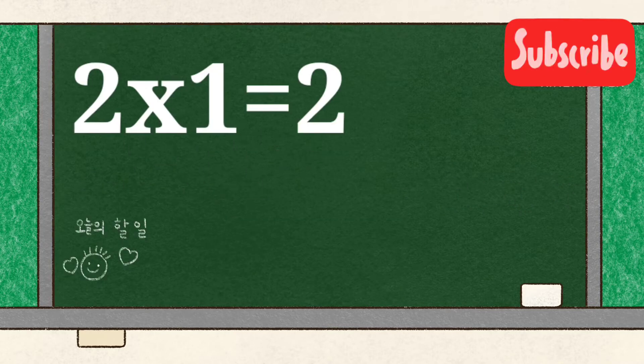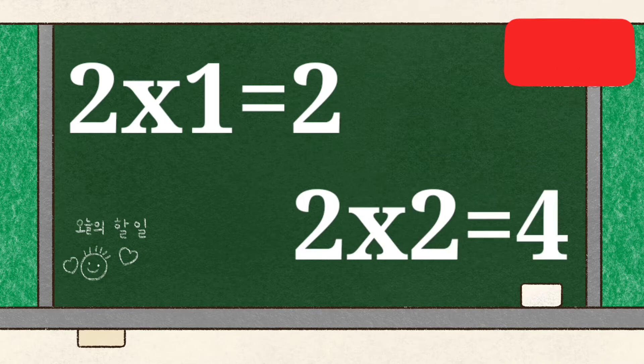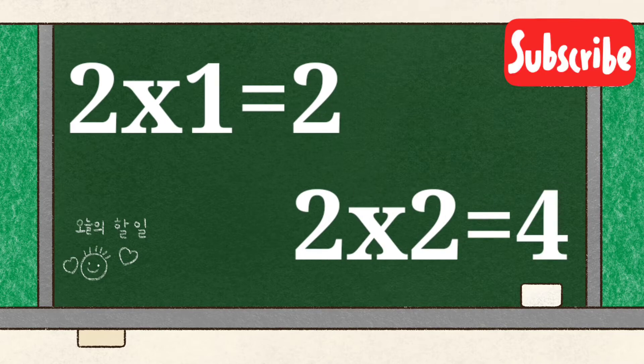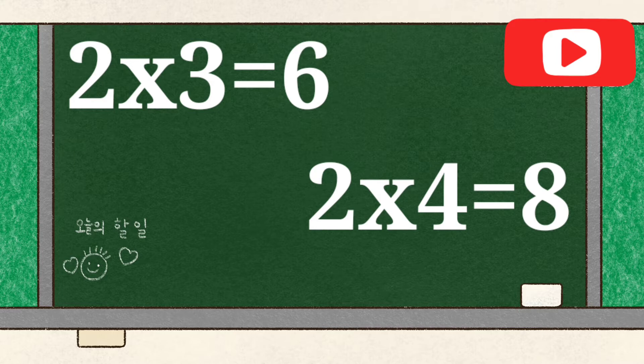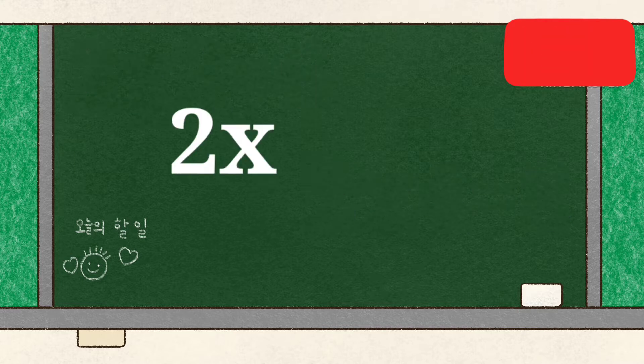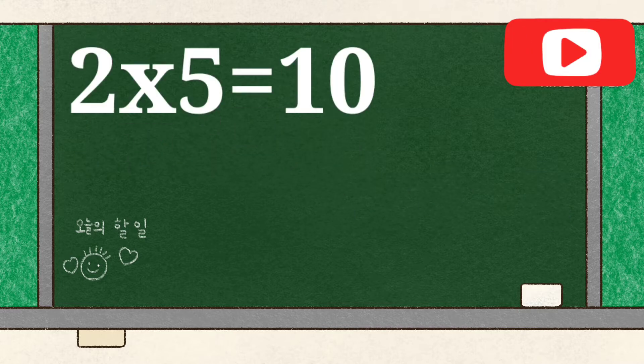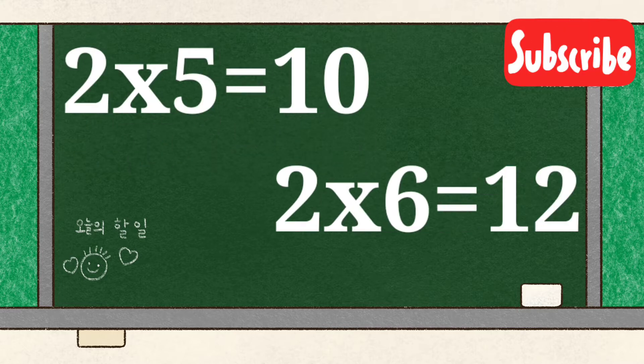2 1's are 2, 2 2's are 4, 2 3's are 6, 2 4's are 8, 2 5's are 10,